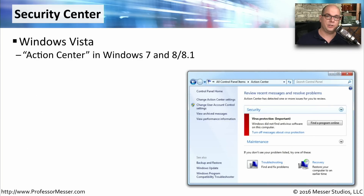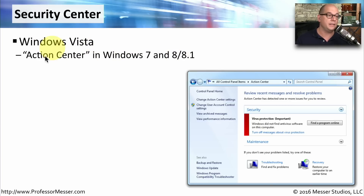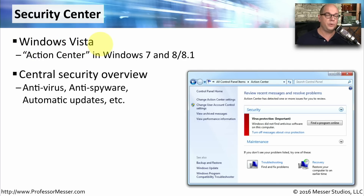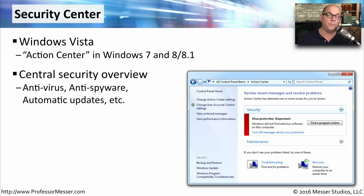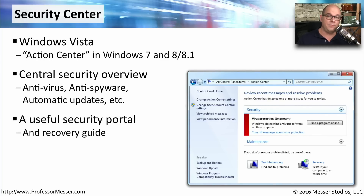Microsoft has tried to centralize the viewing of all security-related tasks in something called the Security Center in Windows Vista, or the Action Center in Windows 7, Windows 8, and 8.1. This gives you a central view of what's going on with security — you can look at the status of your antivirus, anti-spyware, automatic updates, and any third-party products providing security features. It's a useful way to roll up and see everything at once, and also serves as a good portal for resolving problems.